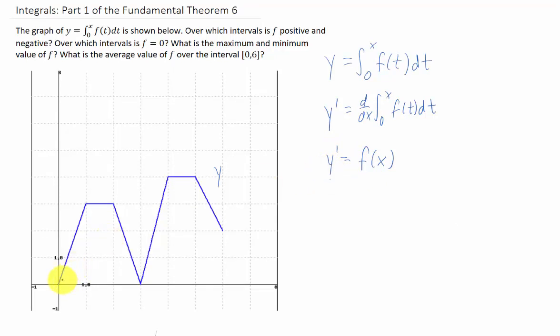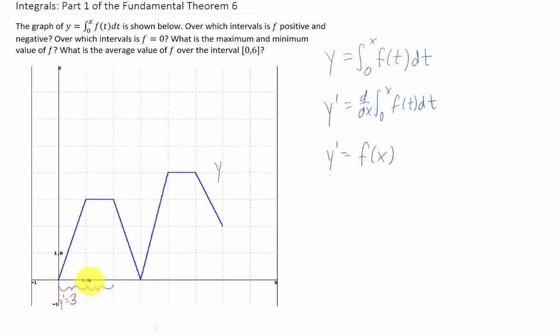We can actually go to this function and find the slope of y directly from the graph. On this interval from 0 to 1, what's the slope here? It looks like our slope is 3. On this interval here from 1 to 2, it looks like the slope of y equals 0.